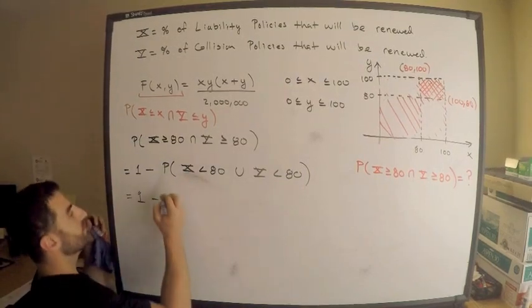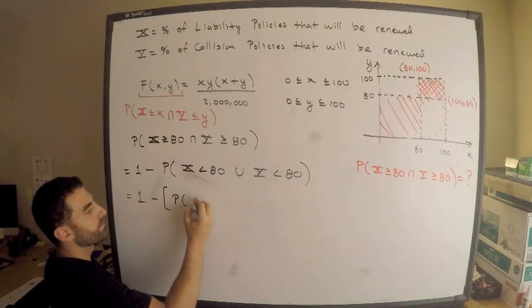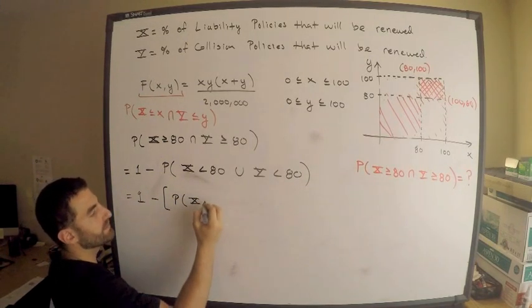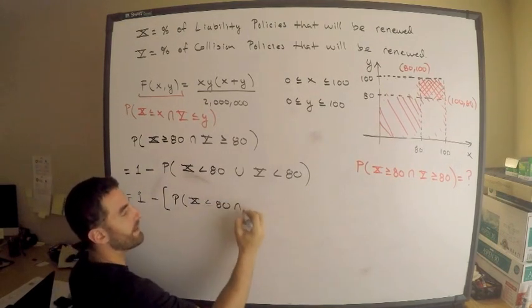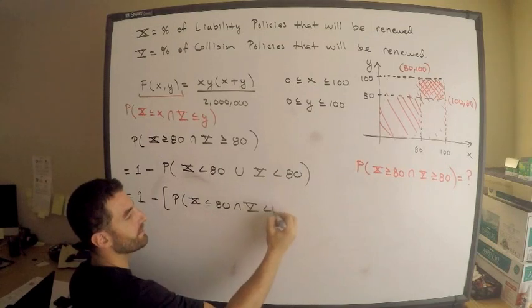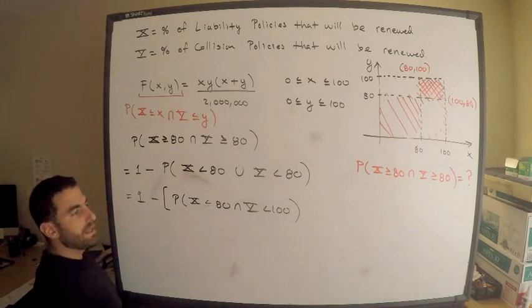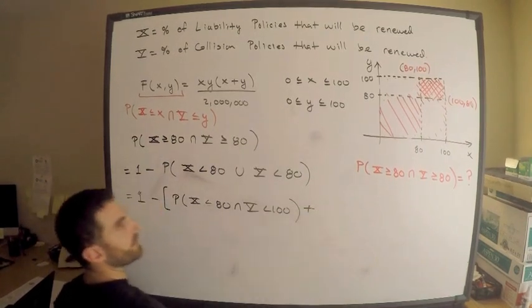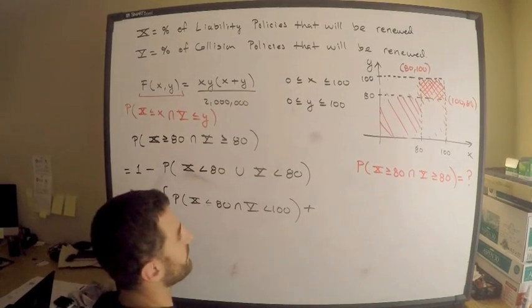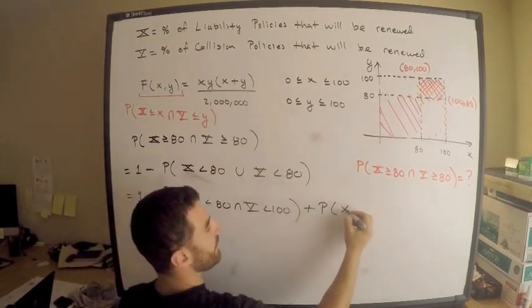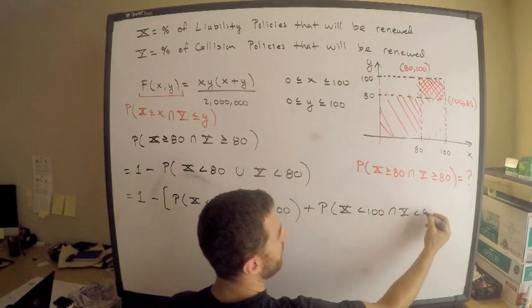So this is equal to, again, I need to find the probability that X is less than 80 and Y is less than 100, okay? Plus the probability that X is less than 100 and Y is less than 80. This takes care of the rectangle that was wider than it is tall.